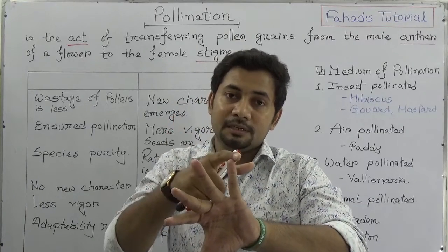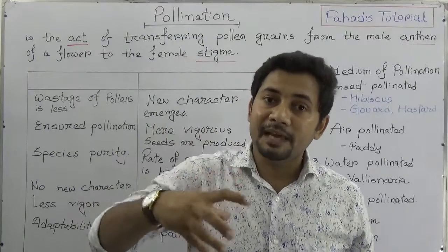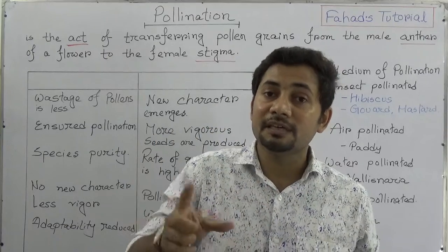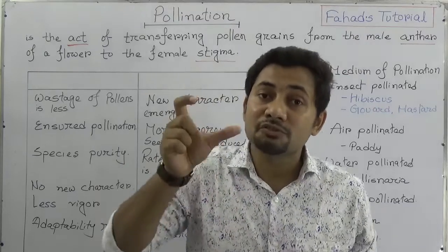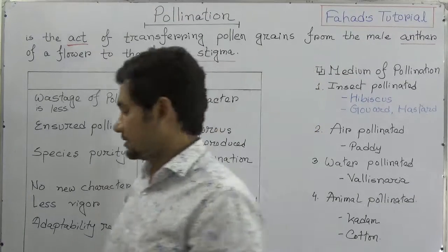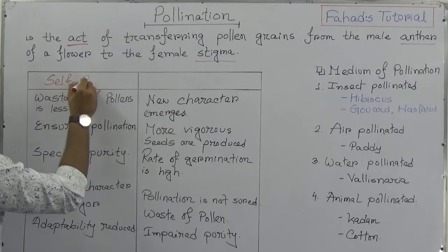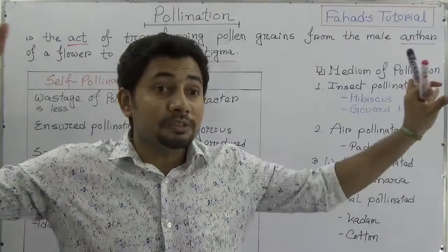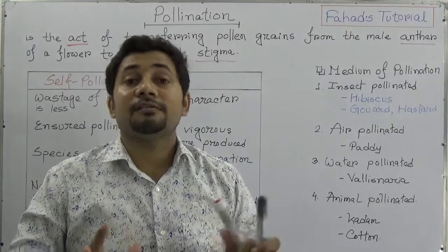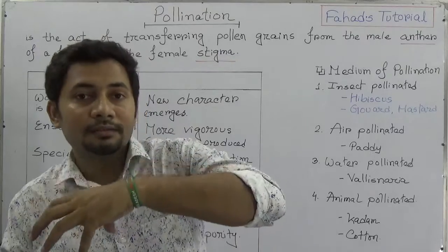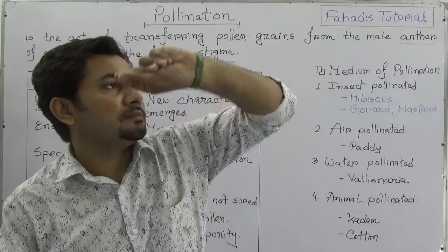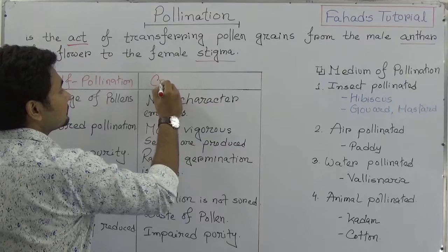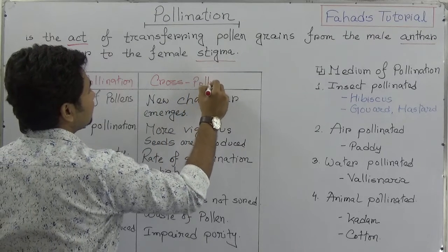Transfer from anther to stigma can happen within the same flower, or even between two different flowers on the same plant. When the transfer of pollen grains happens in the same flower or in the same plant between two different flowers, this is called self-pollination. If the transfer happens between two different plants of the same species — like cotton flowers — that is called cross-pollination.